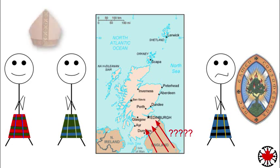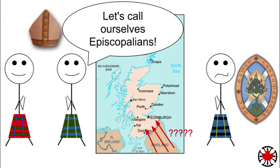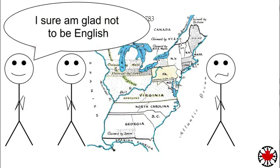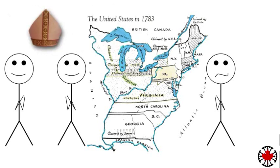As the Scottish Anglicans used bishops for church governance, they used the term Episcopalians. Fast forward to the end of the 18th century and the American War of Independence, and a similar situation arises.